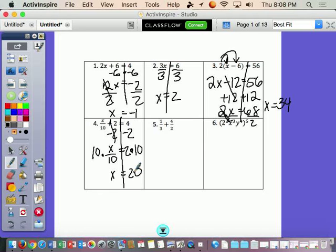Number 5, we've got to get common denominators. I'm going to multiply 1 third by 2, giving me 2 over 6. I'm going to multiply 4 over 2 by 3. That gives me 12 over 6. And together, I get 14 over 6.